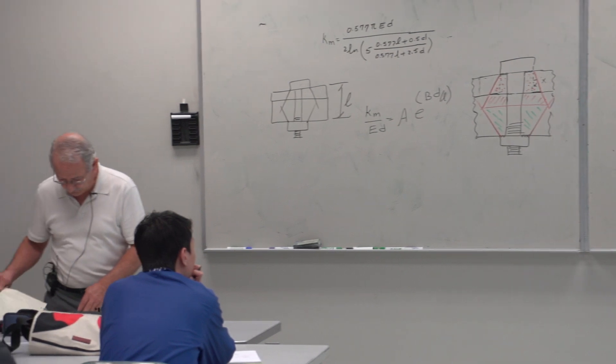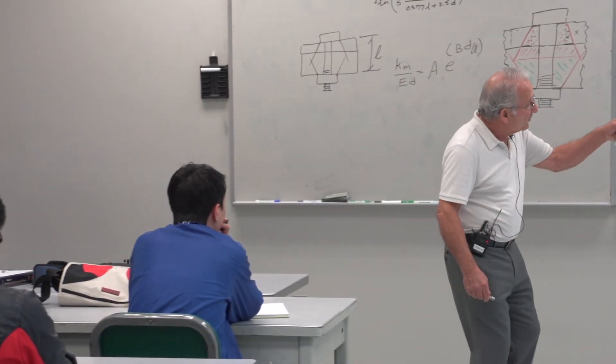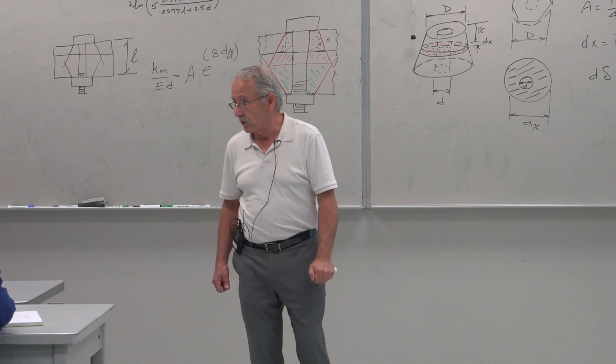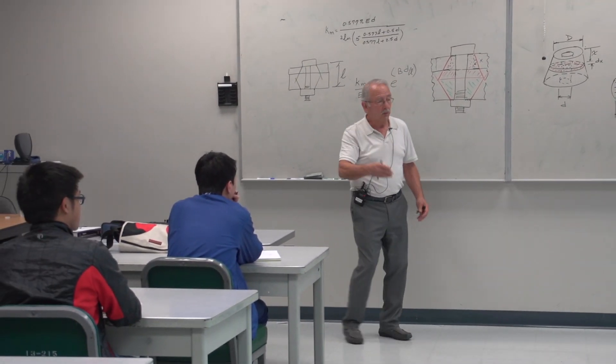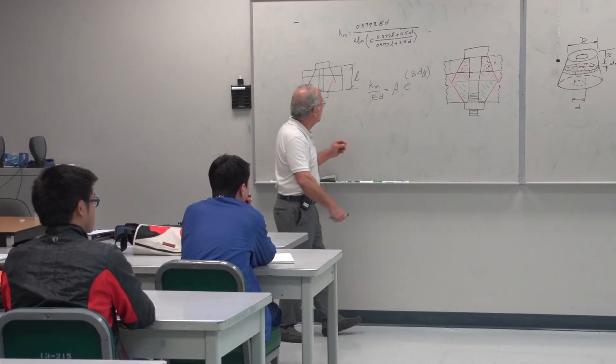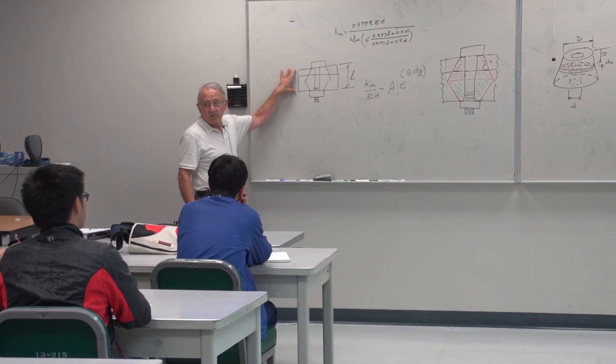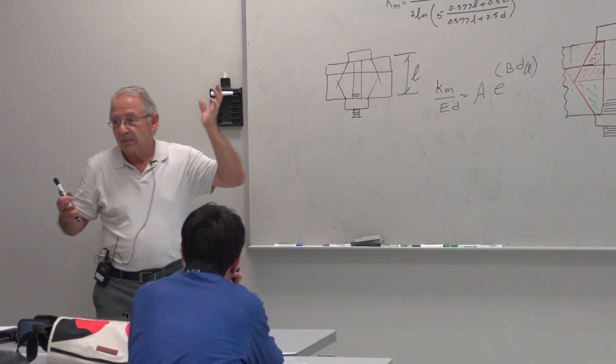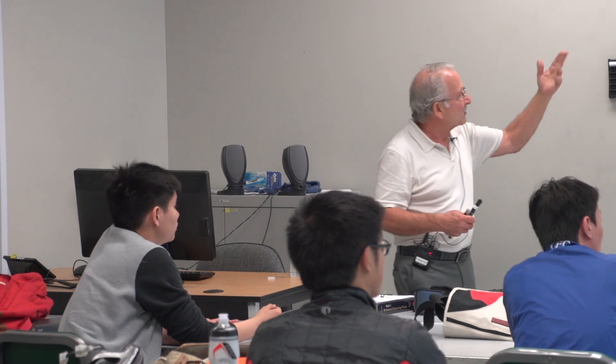To confirm: KM equals the sum of 1/KMi from i=2 to however many frusta you have. The reason it starts at 2 is you must have a minimum of two frusta — one at the top and one at the bottom.